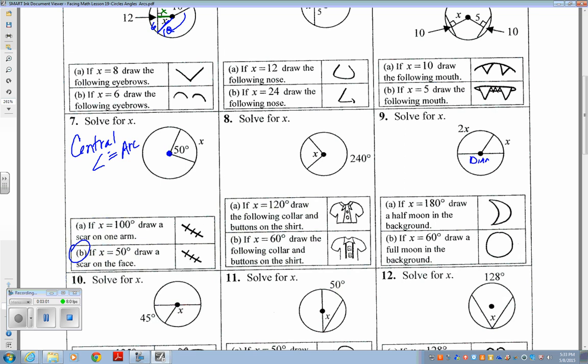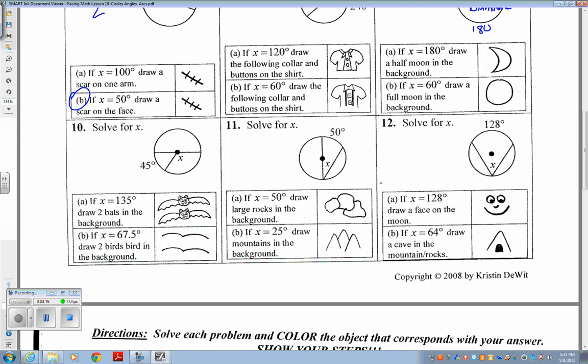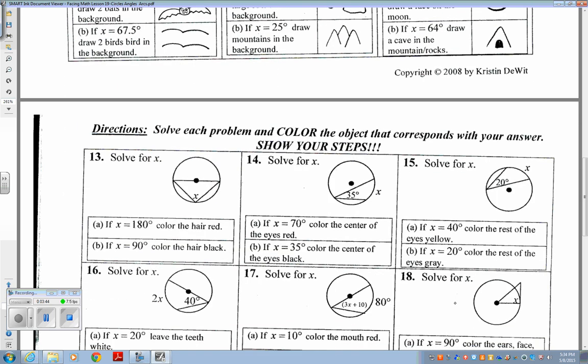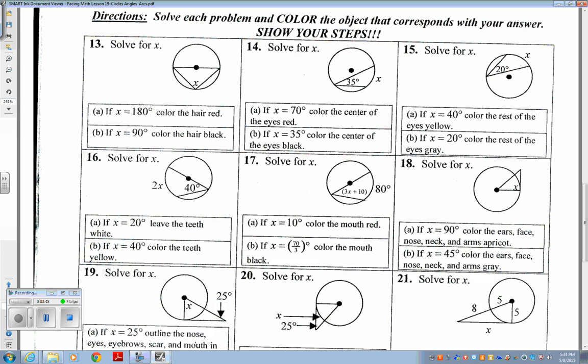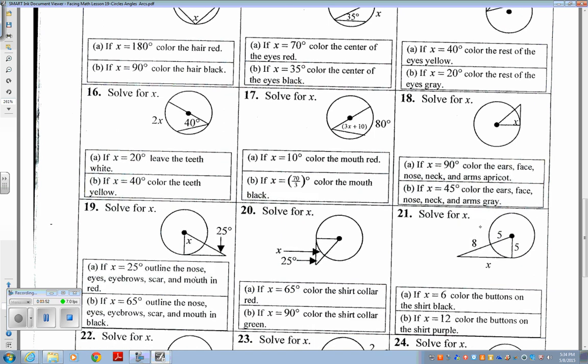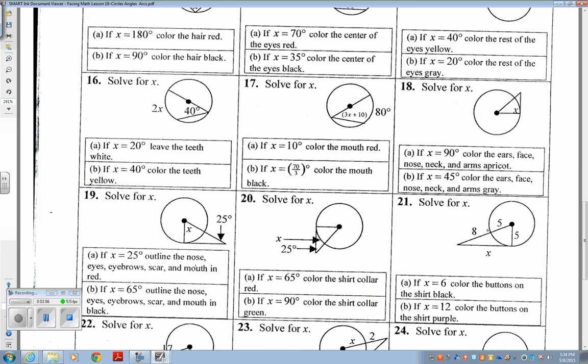Understand when you have a diameter on number 9, I spelled that wrong, sorry. It cuts the circle in half. So that's going to help you there. But you do also on 11 have an inscribed angle. This is what we did on Friday, because the vertex is on the circle, and so when you have an inscribed angle, it is equal to half the intercepted arc. This was on our notes that we did on Friday. Look at the video that I posted on Motto. If you cannot recall, watch the video again.